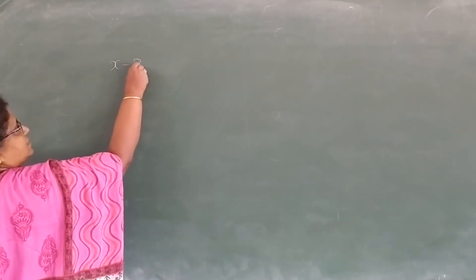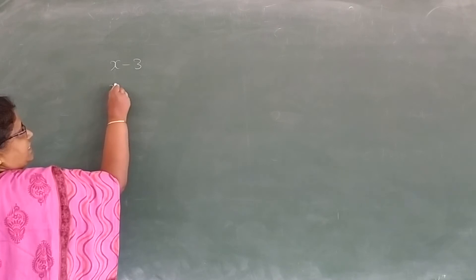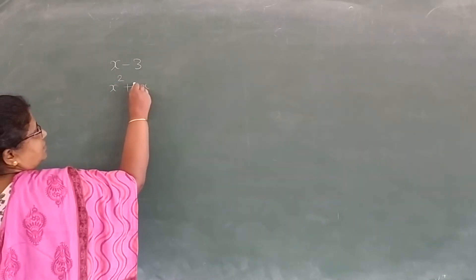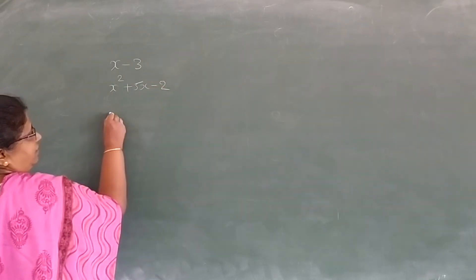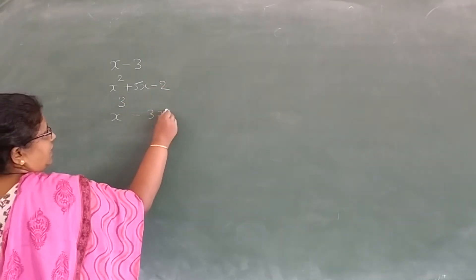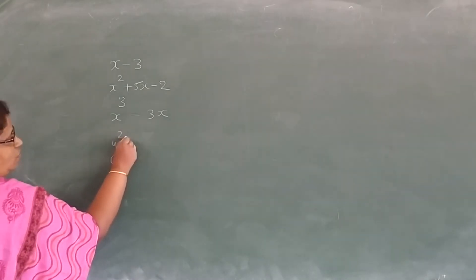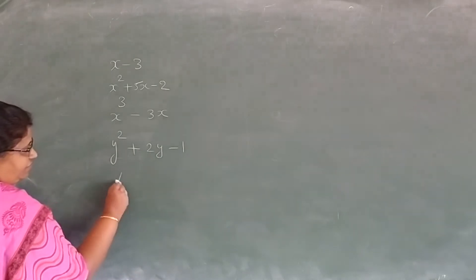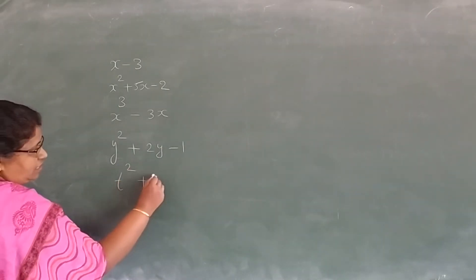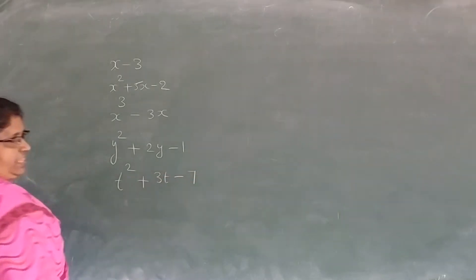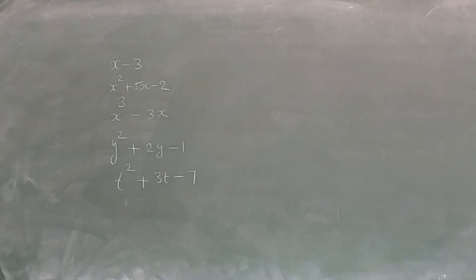If I write a polynomial x minus 3, or x square plus 5x minus 2, or x cube minus 3x, or y square plus 2y minus 1, or t square plus 3t minus 7 — all these are polynomials.